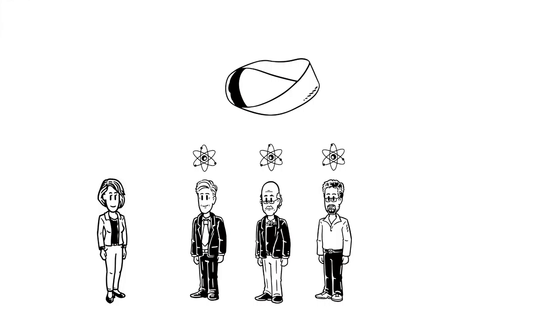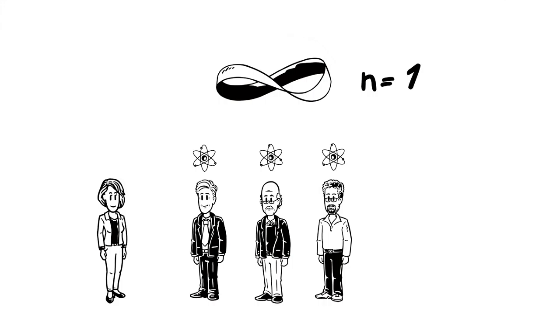Topology describes properties that are preserved under deformations and manipulations. In topology, an integer number called a topological invariant can be assigned to all objects that share the same properties.